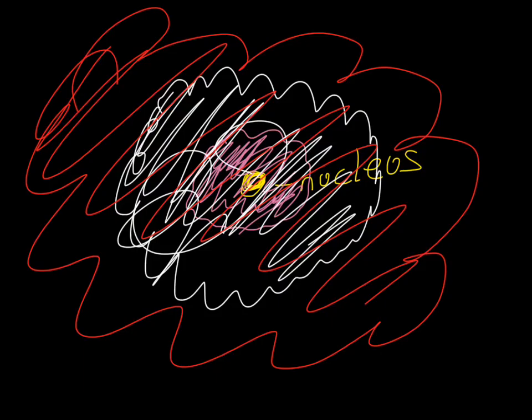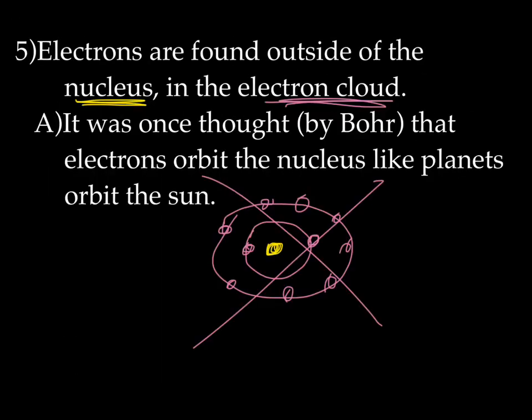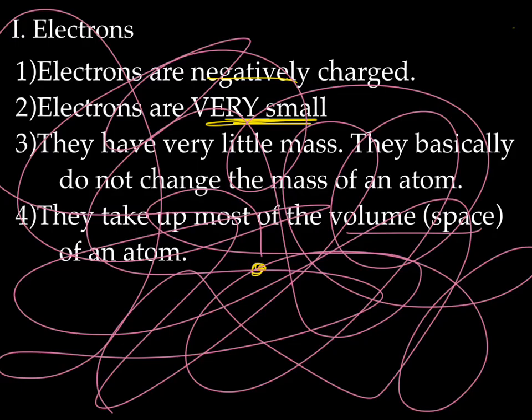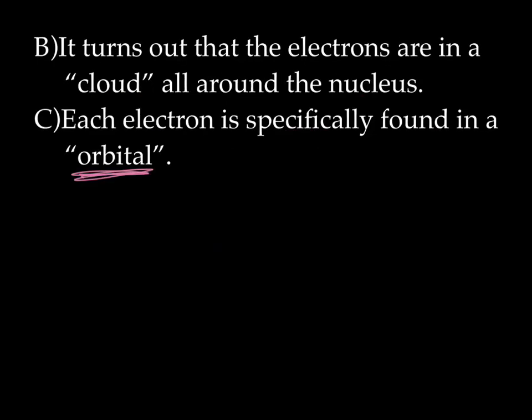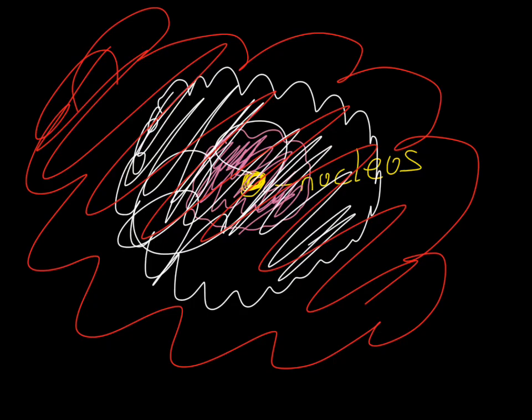This particular model is sort of a conglomeration — a putting together of the orbit model and my scribbling model. So it's more organized than the scribbling model, but less exact than the orbit model. So that's the energy levels.